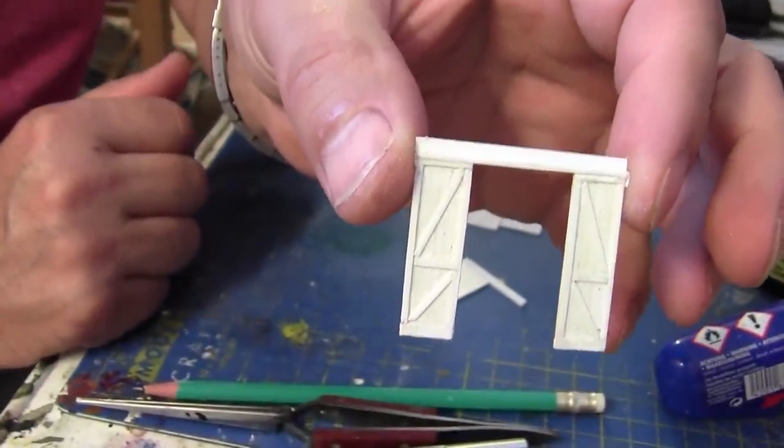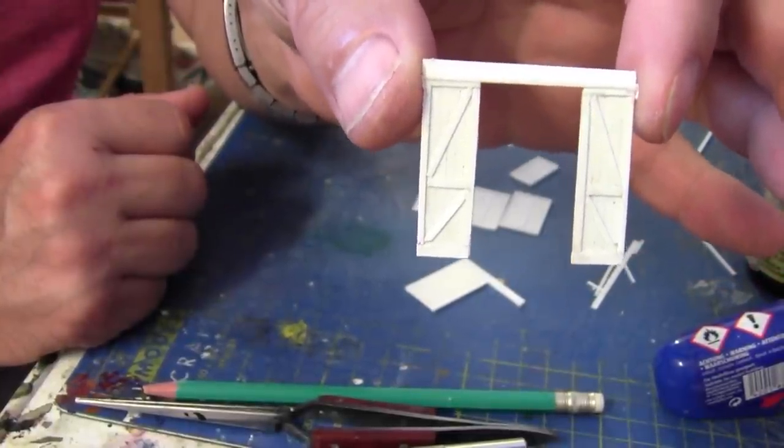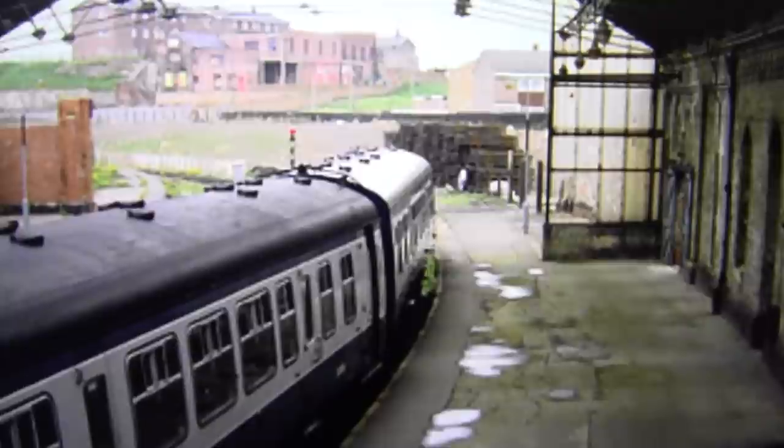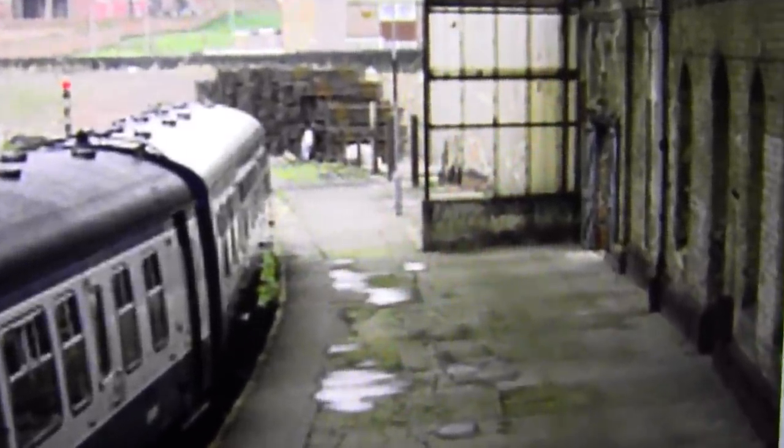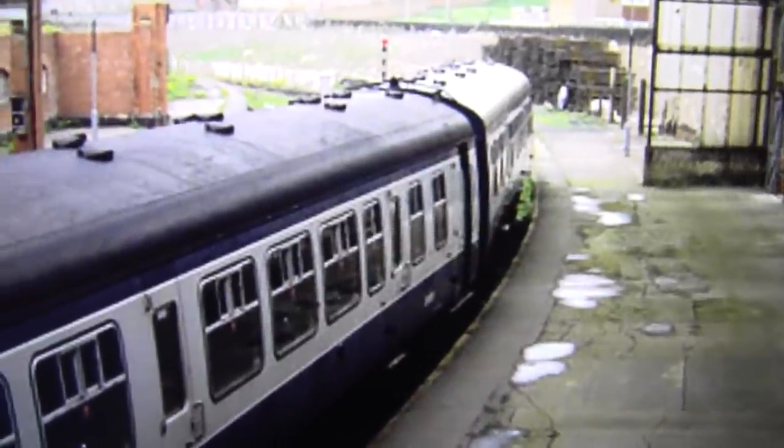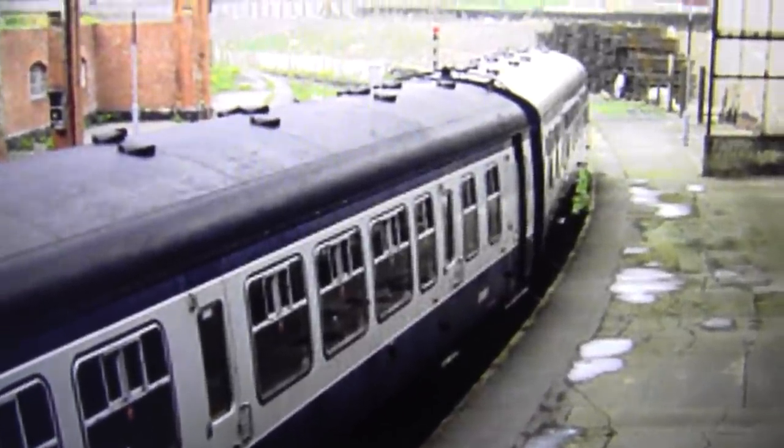And then once this is dry I shall score down the center of that and it'll look like two doors. So I shall continue until I get them all to this stage. I've glued all the strips into the center of the doors now so I'm just going to turn this single door into a double door just by scoring the plastic strip.